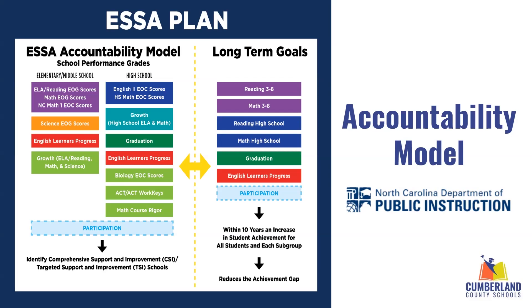On the left in purple, you see the elementary and middle school achievement indicators, which include reading EOG scores, math EOG scores, and for middle school students taking North Carolina Math 1, those scores are also included. In addition, science EOG scores in fifth grade for elementary and eighth grade for middle, and English Learner Progress. For high schools in the achievement portion: English 2 and high school math EOC scores, graduation rate, English Learner Progress, biology EOC scores, ACT and ACT WorkKeys, and math course rigor.